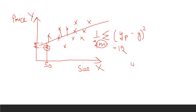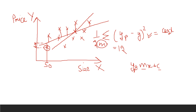As different lines can be made by changing the values of m and c, we draw different lines and calculate the same error for each. We note this error using the cost function formula. This is the cost function for linear regression that calculates the error term.